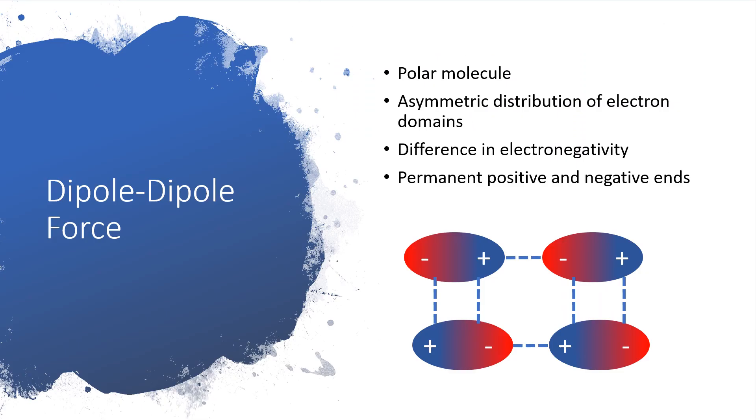I'm going to start with dipole-dipole forces because I think these are the easiest to understand. To have dipole-dipole forces present, the molecule has to be polar to give us that permanent positive and negative end of the molecule. That happens because there's an asymmetric distribution of electron domains. The electrons are not uniformly distributed through the entire molecule. Instead, they tend to spend more time on one spot in the molecule than they do in another spot. That spot where they spend more time ends up with a slight negative charge, and that spot where they don't hang out as much ends up with a slight positive charge. This happens when the atoms that are involved in the bond have a difference in electronegativity, so one of the atoms pulls on the electrons more strongly than another one does.